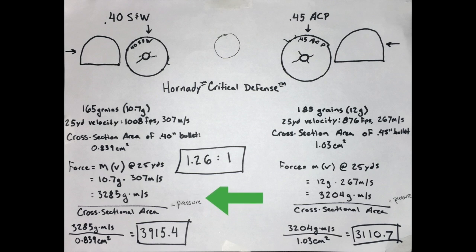Divide that force by the area to get pressure. For the 40 caliber bullet, that area is 0.839 cm². When you divide the force of 3285 grams-meters per second by that area, you get a pressure of 3915.4.